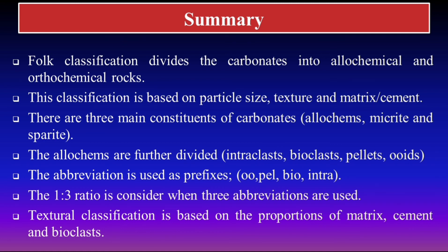In conclusion, we discussed that Folk Classification divides rocks into two main types: allochemical and orthochemical. We explained classification based on particle size, texture, and matrix, and covered the three main constituents — allochems, micrite, and sparite — and the division of allochems into intraclasts, bioclasts, pellets, and ooids. We learned to name rocks using prefixes and how to abbreviate rocks with more than two allochems. Finally we discussed the textural classification based on proportions of matrix, cement, and bioclasts. Thanks for watching — hope you enjoyed the lecture.